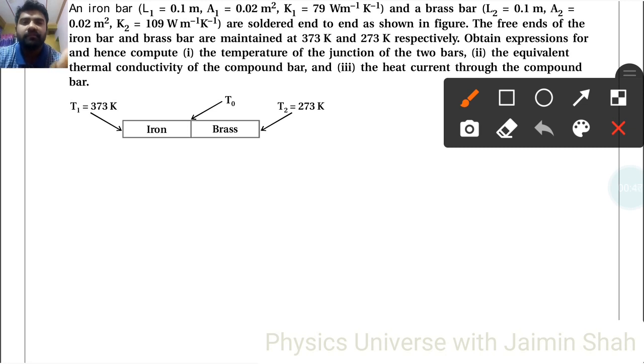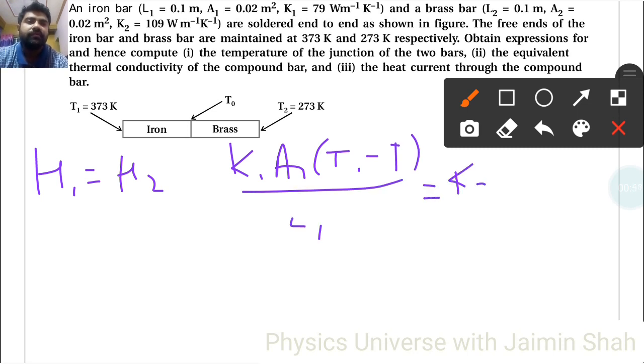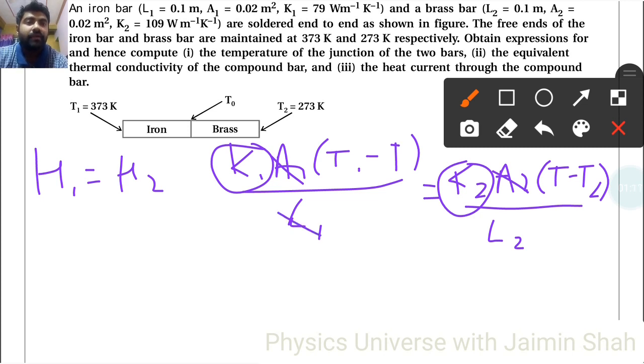So H1 is equal to H2. Now H1 equals K1 A1 (T1 minus T) upon L1 is equal to K2 A2 (T minus T2) upon L2. Now see, areas are same here, so A1 A2 directly cancel out, and L1 L2 are also same.